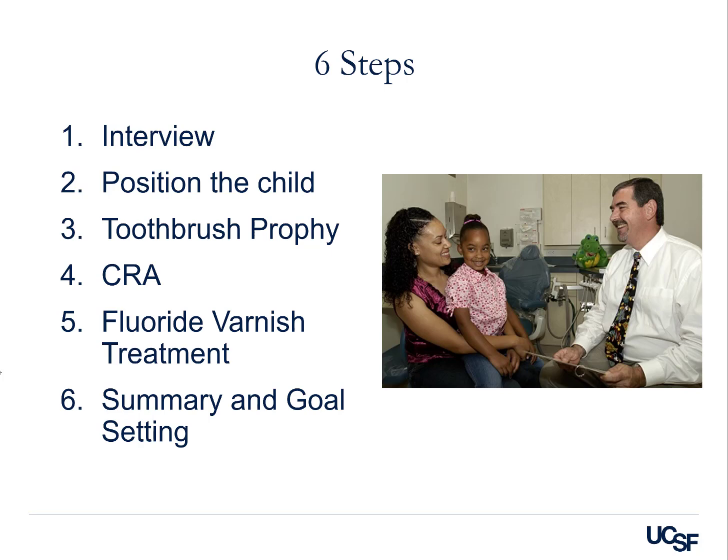Six steps: interview, position the child knee-to-knee, toothbrush prophy, floss demonstration, do the clinical Caries Risk Assessment (CRA) to collect all evidence of risk factors and disease factors, apply fluoride varnish, and then summarize — establishing a small baby goal so that parents and the child can accomplish it at home, and we'll check it at the recall visit for improvement.